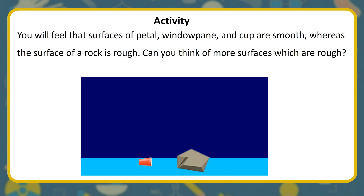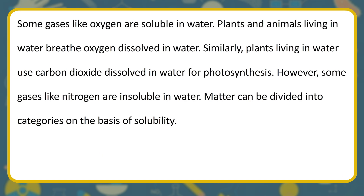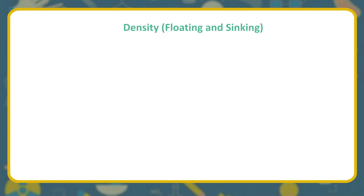Can you think of more surfaces which are rough? Some gases like oxygen are soluble in water. Plants and animals living in water breathe oxygen dissolved in water. Similarly, plants living in water use carbon dioxide dissolved in water for photosynthesis. However, some gases like nitrogen are insoluble in water. Matter can be divided into categories on the basis of solubility, density, and floating and sinking.